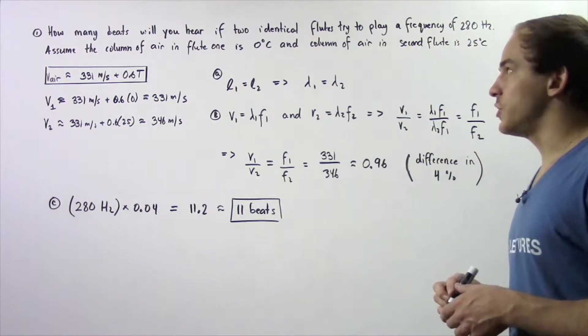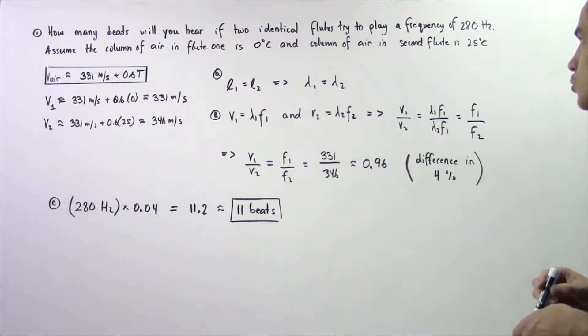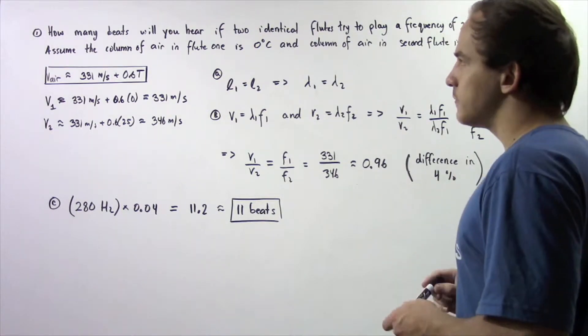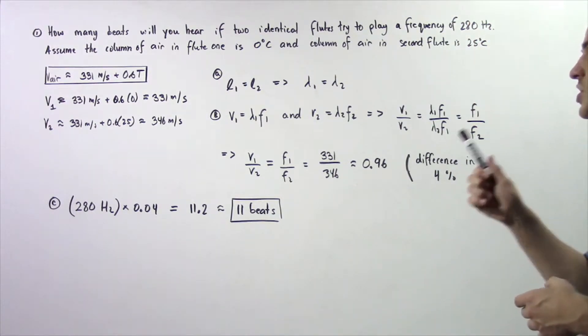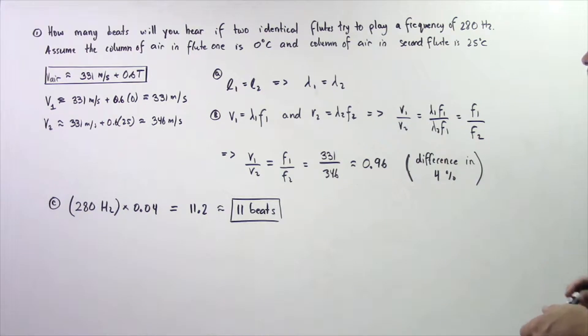How many beats will you hear if two identical flutes try to play a frequency of 280 Hz? Assume the column of air in flute one is at a temperature of zero degrees Celsius and the column of air in the second flute is at a temperature of 25 degrees Celsius.